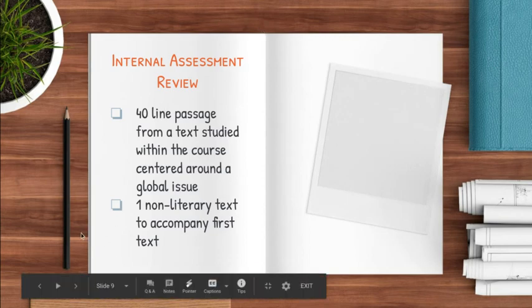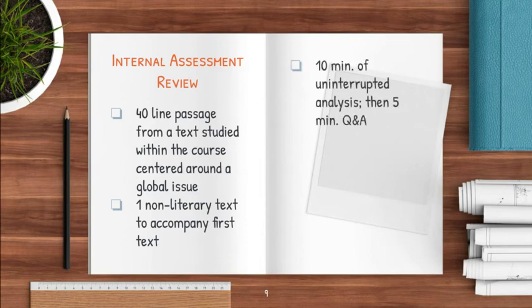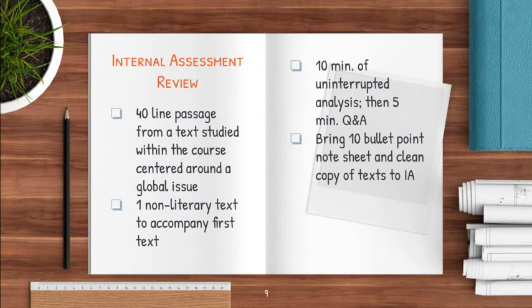A note about that non-literary text: most people go with an image, and that's completely fine. I would advise that you go with an image that has at least some text on it, so you can talk about the text itself but also the interplay between what the text is saying and its relationship to what is depicted in the image. The commentary itself is 10 minutes of uninterrupted analysis from you, followed by a five-minute question and answer between the two of us about your comments and analyses. You'll bring a 10-bullet-point note sheet and clean copies of the text you intend to use for your IA.